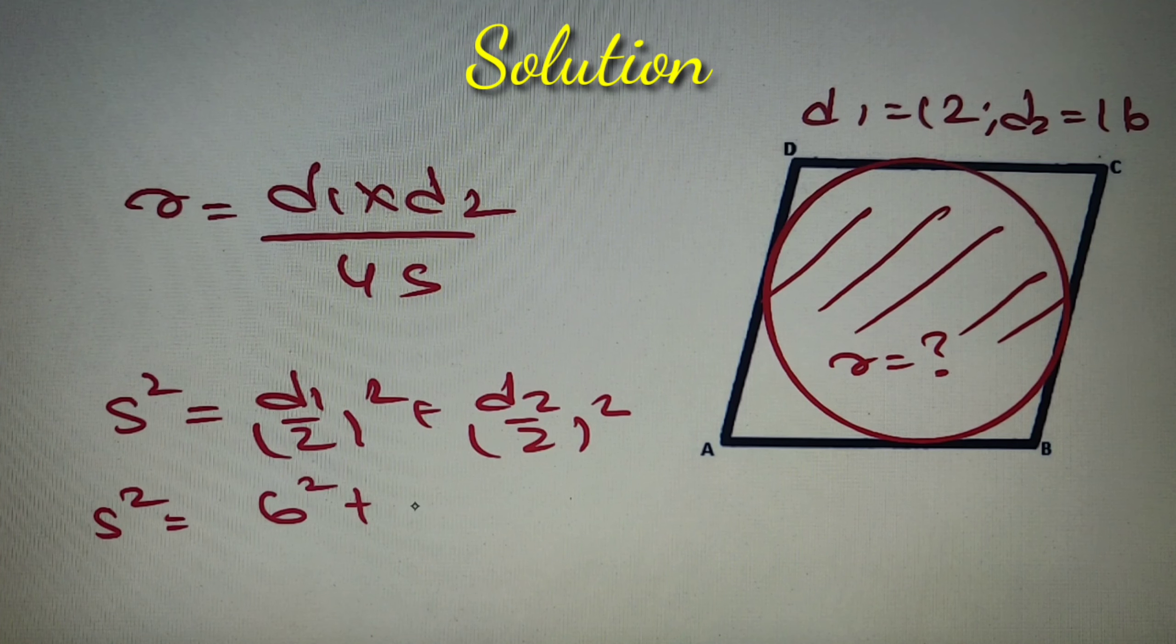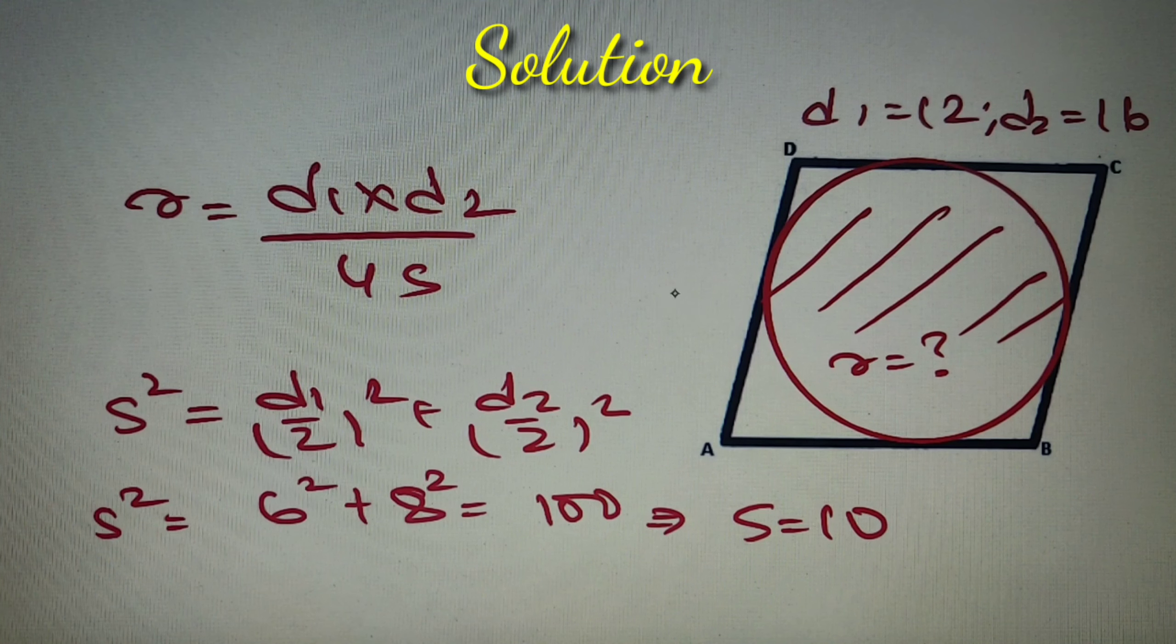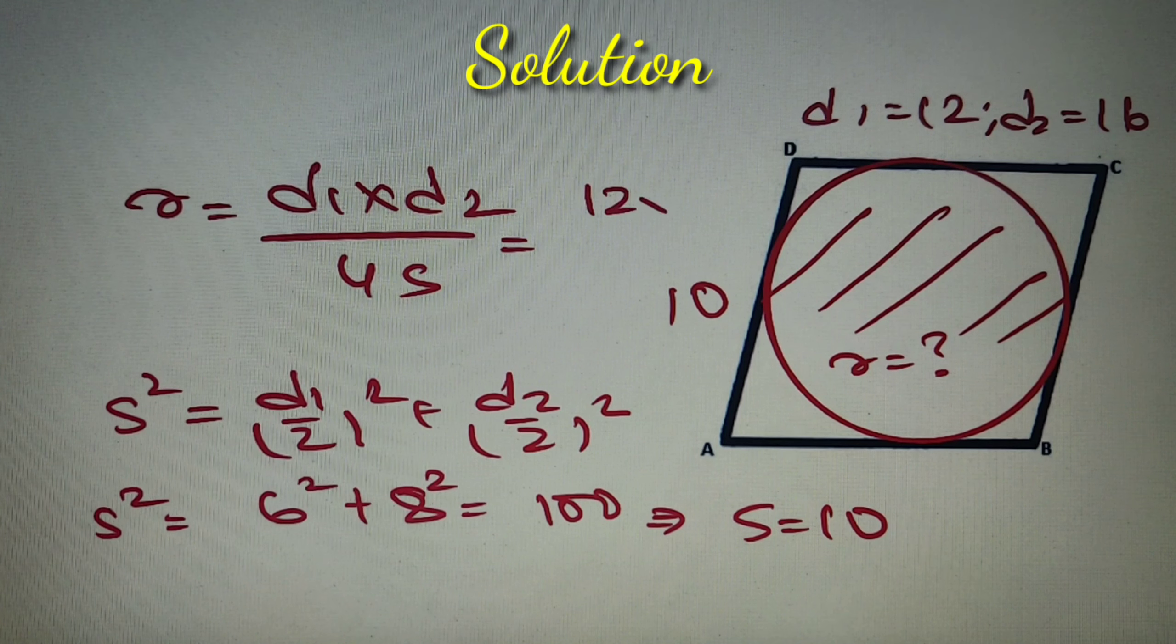So I can say that S square is equal to 12 by 2 whole square that is equal to 6 square plus 16 by 2 whole square that is equal to 8 square. So I've got S square as 36 plus 64 which is equal to 100, or I can say that the side of the rhombus is equal to 10.